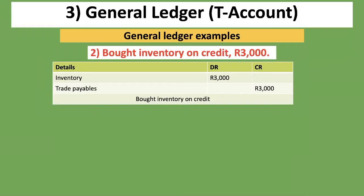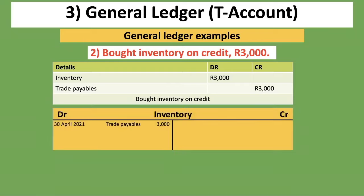The second transaction: the company bought inventory on credit for 3,000 rand. The two accounts are inventory — an asset that increases on the debit side — and trade payables, a liability that increases on the credit side. For the inventory T-account, we open it with debit on the left and credit on the right, put the date, and the detail is trade payables with an amount of 3,000 rand. It would be incorrect to put 'inventory' under the inventory account.